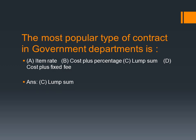Next question: the most popular type of contract in government departments. The most popular contract used in government departments is the item rate contract.